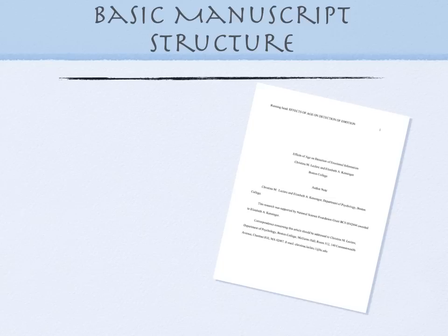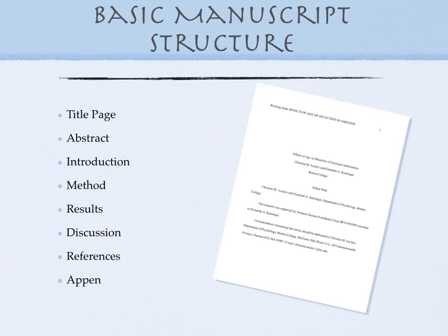First comes the title page, and if you need a little help with those headers, just take a look at our other tutorials on how to put those headers in Word or in Pages. Next comes the abstract. This is a short summary of your research or your proposal, and it should be no more than 250 words long. If this is for a class assignment, check with your professor — he might not require an abstract if the proposal is short.